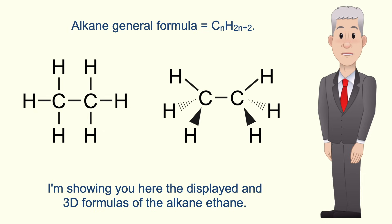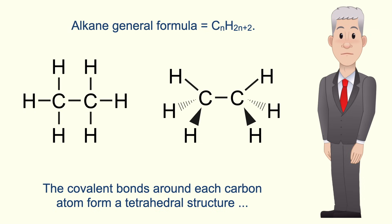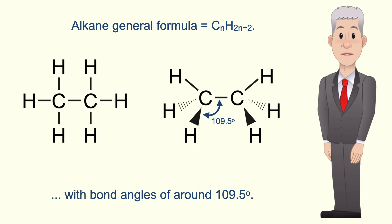I'm showing you here the displayed and three-dimensional formulas of the alkane ethane. Alkanes are saturated hydrocarbons with the general formula CₙH₂ₙ₊₂. The covalent bonds around each carbon atom form a tetrahedral structure with bond angles of around 109.5 degrees.